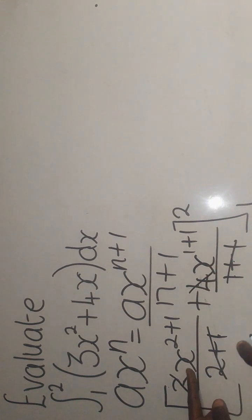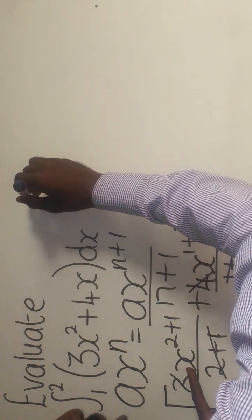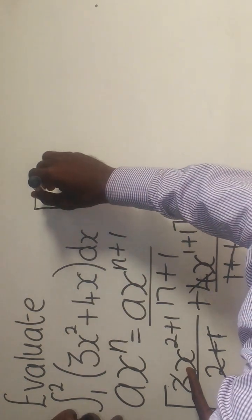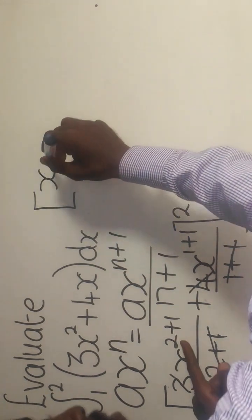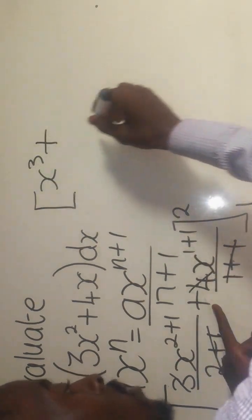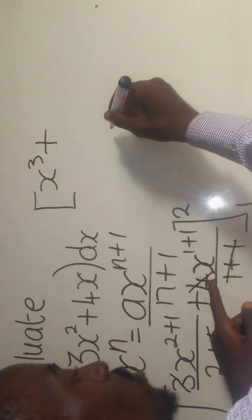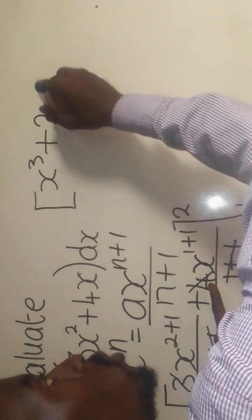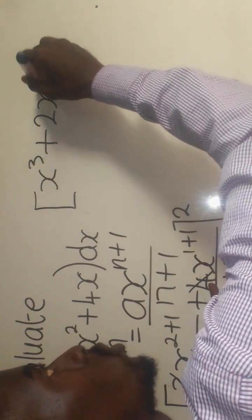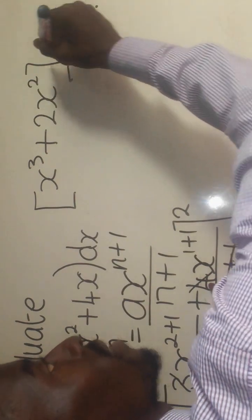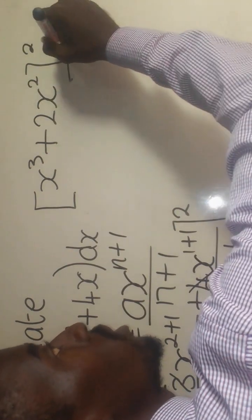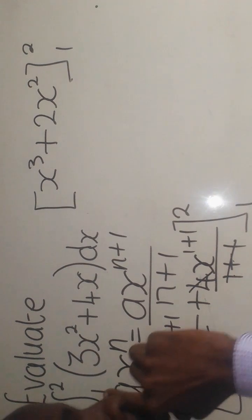So on top here, I'm going to remain with X to the power 3, you say plus, and then here I'm going to remain with 2, so 2X to the power 2 there. Then you put the limits — we have 2 on top and 1 below.